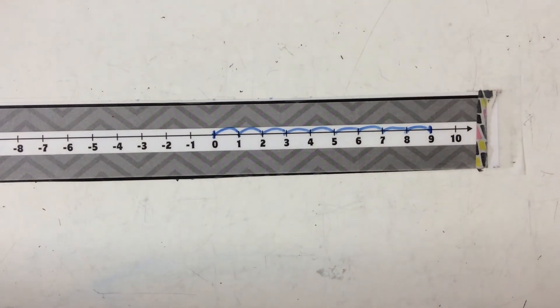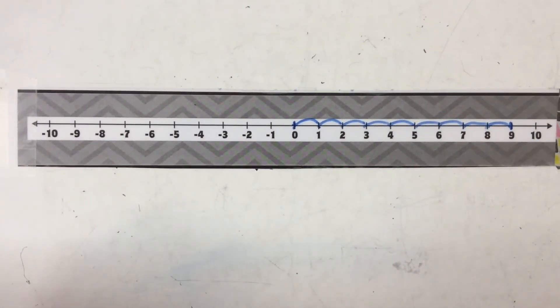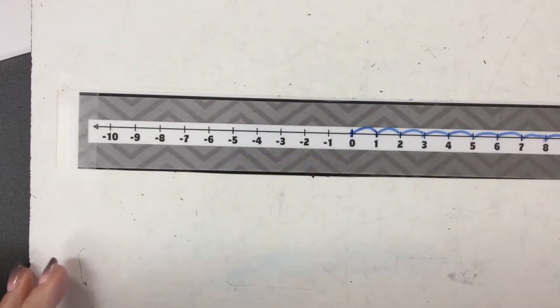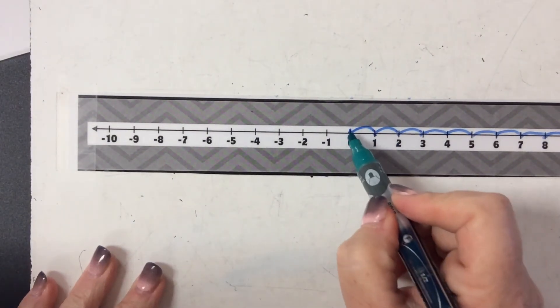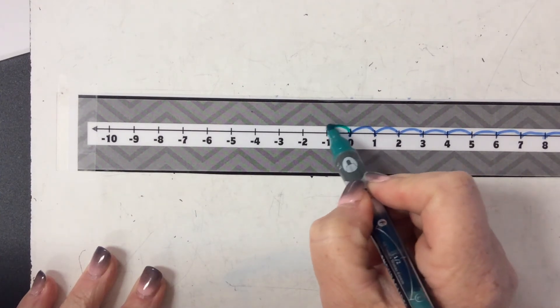9 is nine spaces from 0. The opposite of 9 has that same distance from 0. So if I'm going to start at 0, I'm going to go the opposite direction. Here, the opposite direction.